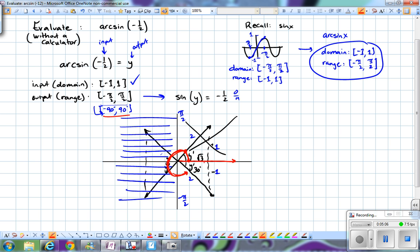So instead, what I want to do is go negative in the negative direction and indicate that y is equal to negative 30 degrees. That way, it falls within the negative 90 and 90 allowable output range.